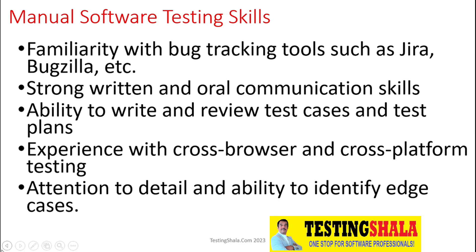Attention to detail is very key. If you want to become successful in software testing, you should pay close attention to details and have the ability to identify edge cases, boundary cases, and negative cases in order to find as many defects as possible. These are the basic key skills — if you have them, you can definitely become a good manual software tester.